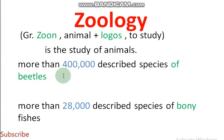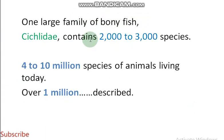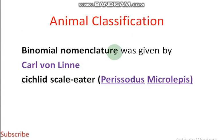In zoology, more than 400,000 described species of beetles and more than 28,000 described species of bony fishes are known. One large family of bony fishes is Sciaenidae, which contains 2,000 to 3,000 species. Over 4 to 10 species of animals are living today, and over 1 million animals have been described by zoologists. Binomial nomenclature was given by Carolus Linnaeus, and the cichlid scale-eater's scientific name is Perissodus microlepis.